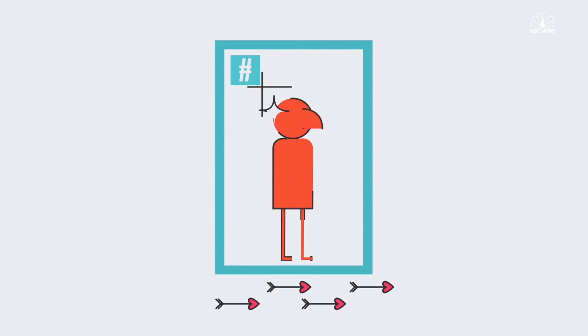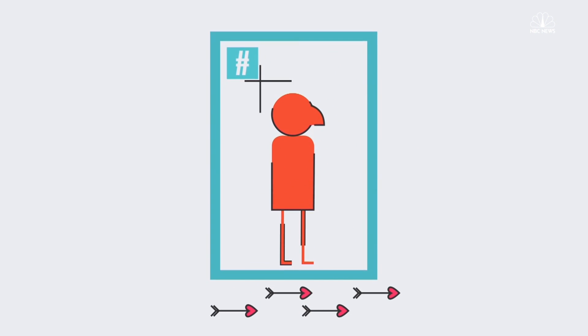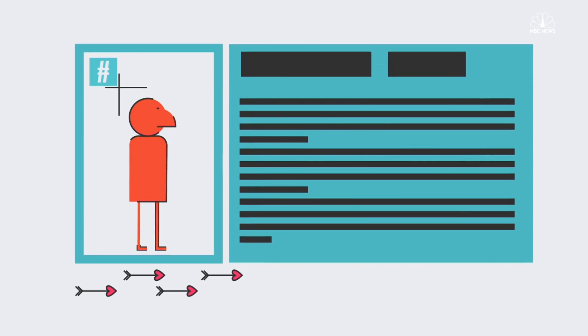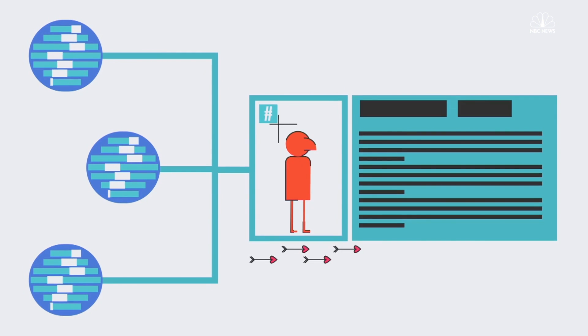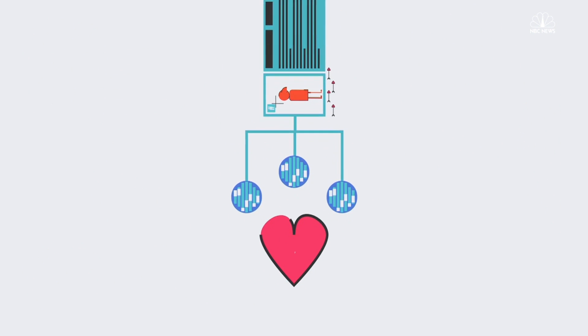Tinder insists that this isn't an attractiveness rating. Desirability involves what you wrote in your profile, for example. The company also says a lot of factors besides swiping affect your ELO score. A bit like love, the rest is a mystery.